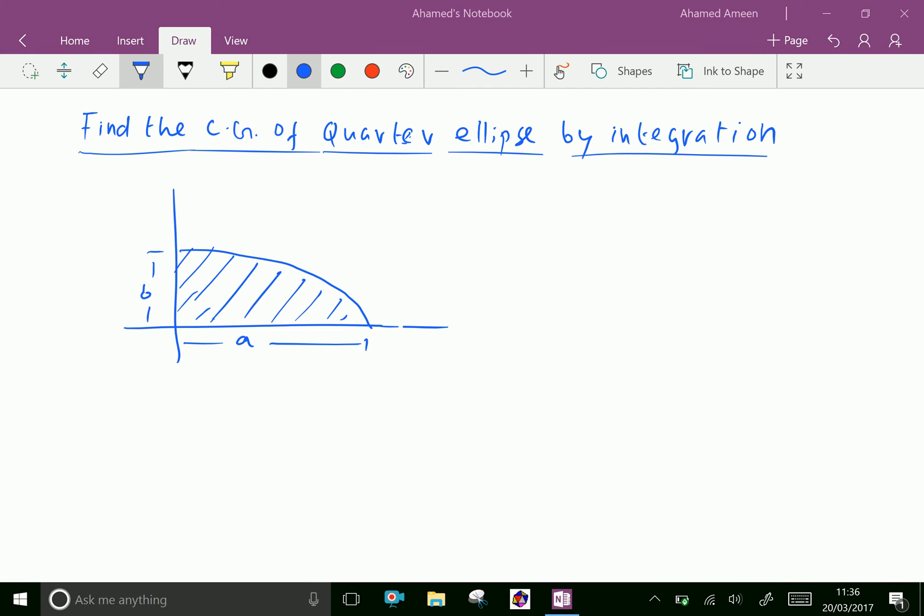Find the center of gravity of quarter ellipse by integration. Now the equation of the ellipse: x squared over a squared plus y squared over b squared equal 1.